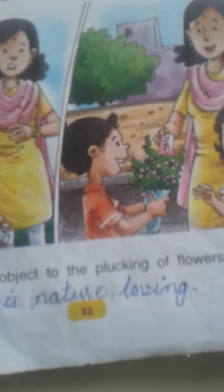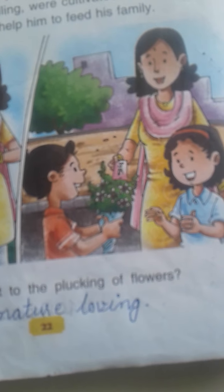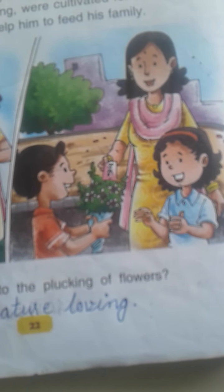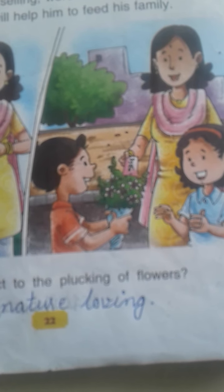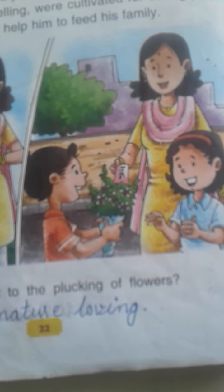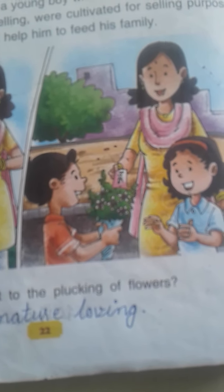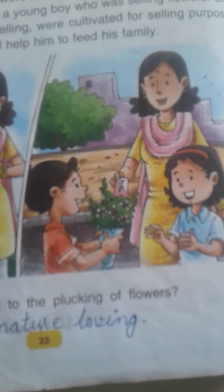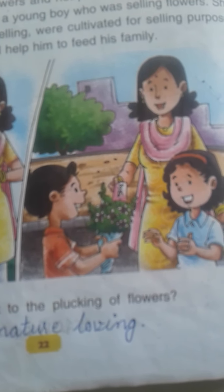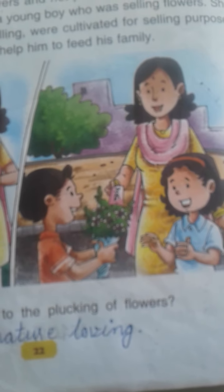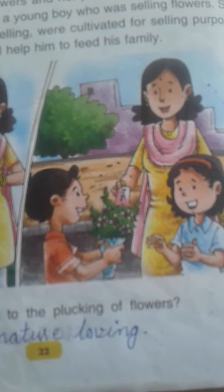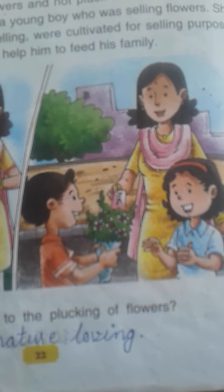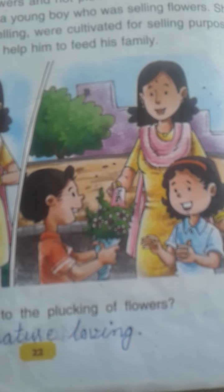A bouquet is made up of flowers. Rita's mother bought that bouquet and told Rita that the flowers in the bouquet are cultivated particularly for this purpose. The boy is selling bouquets, and the money earned from selling them helps the needy boy to take care of and feed his family.